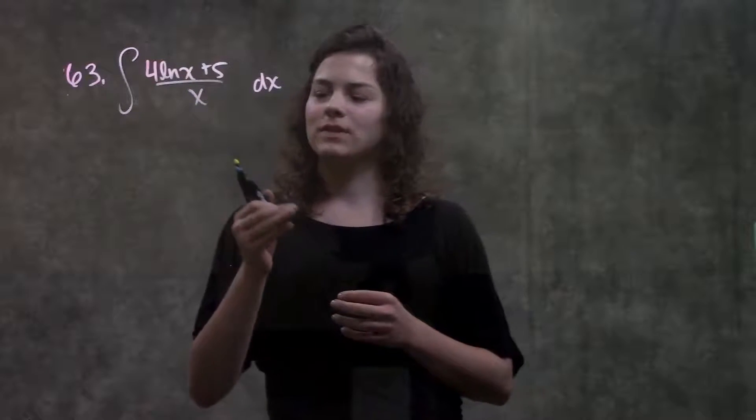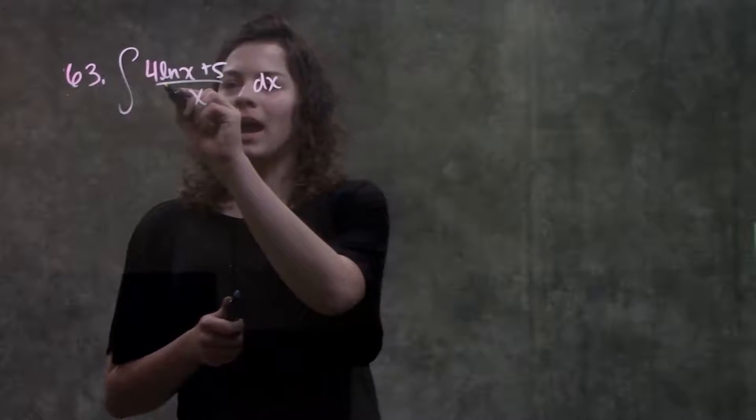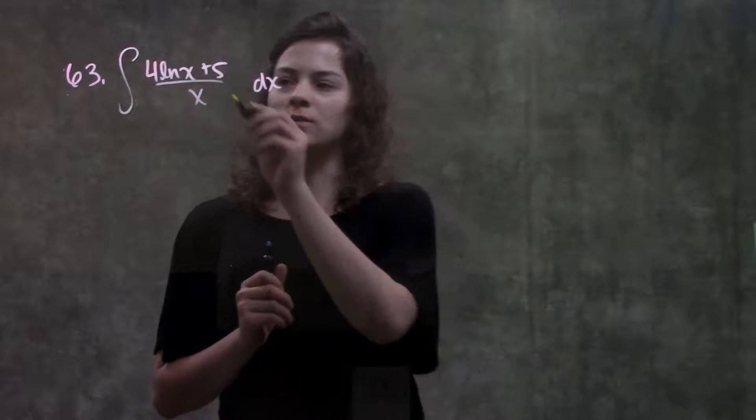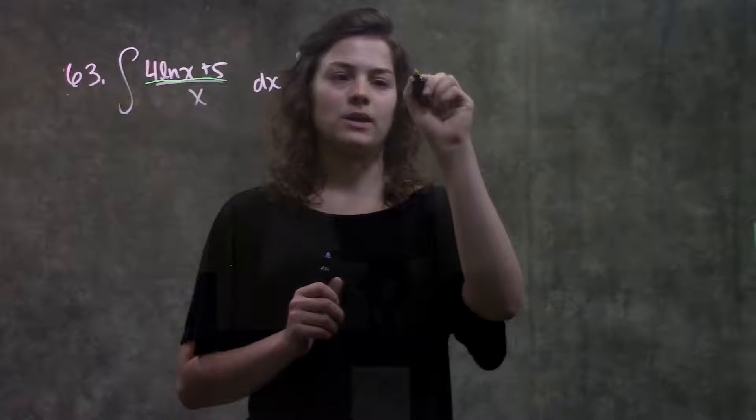So what I'm going to do for this problem is I'm going to use u sub, the thing we learned in section 5.7. And, different from other problems that we've been doing with u sub, instead of setting just one thing equal to u, I'm actually going to set this entire numerator equal to my u.